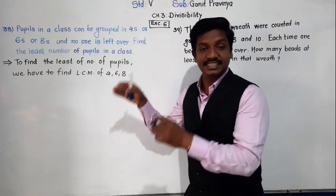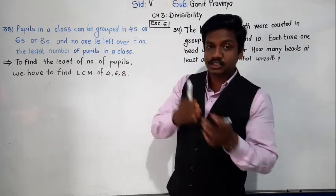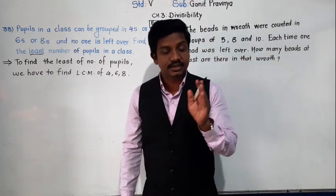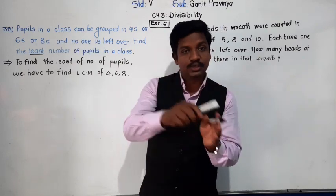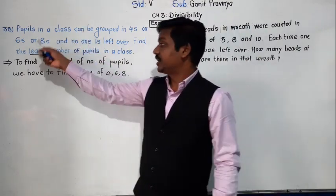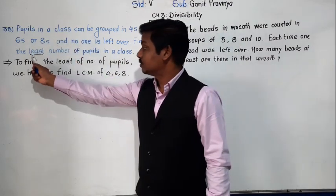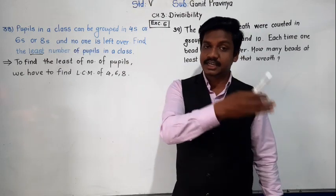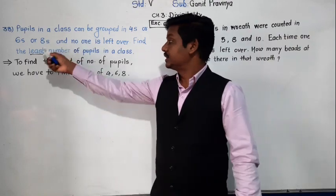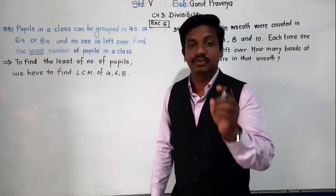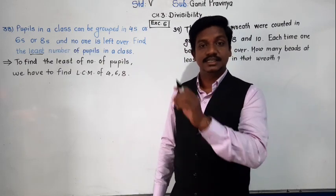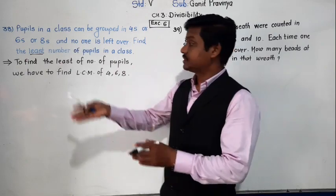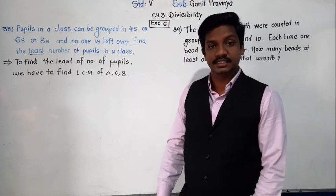How to identify immediately whether we have to find LCM or HCF/GCD? If you observe the word 'least', we have to find the least number, so 'least' indicates Least Common Multiple, that is LCM. If instead of the word 'least' there is the word 'highest', 'greatest', or 'largest', then we have to find GCD. But concept you must understand — sometimes these keywords may not be given, so if we know the concept, we can figure it out easily.